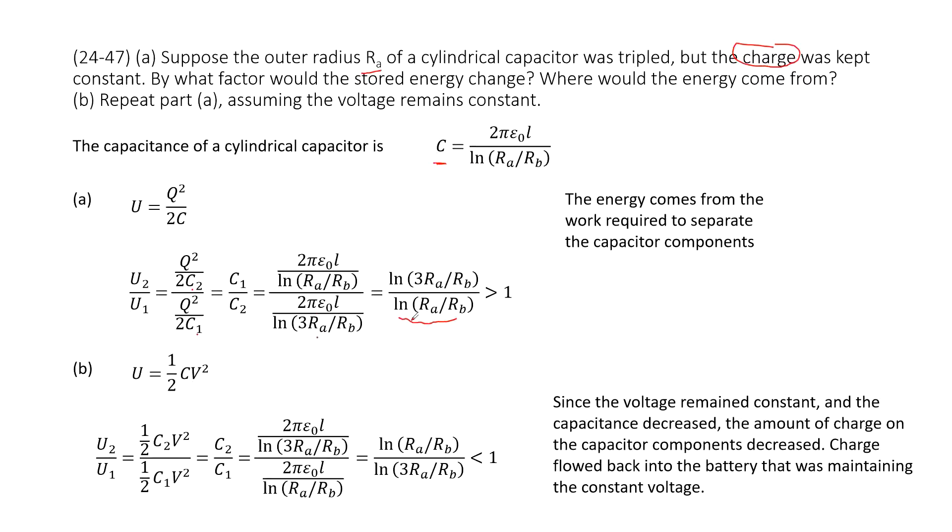We can see in this case it's larger than 1. This term is larger than 1, so that tells us u2 is larger than u1. The final electric energy is larger than initial electric energy.